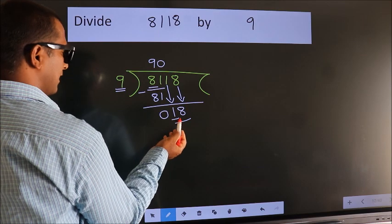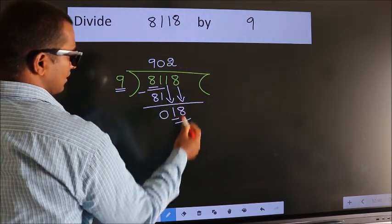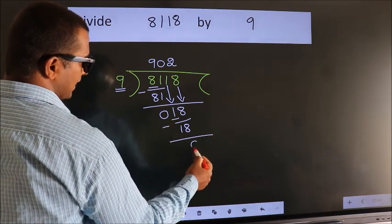When do we get 18 in the 9 table? 9 times 2 is 18. Now we subtract and we get 0.